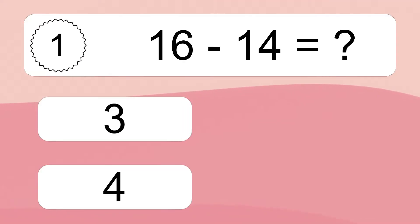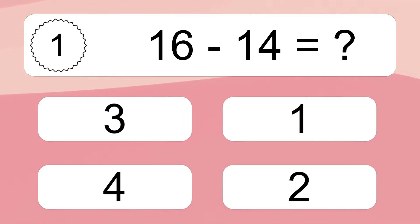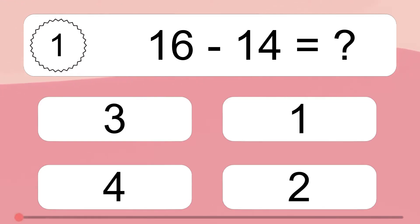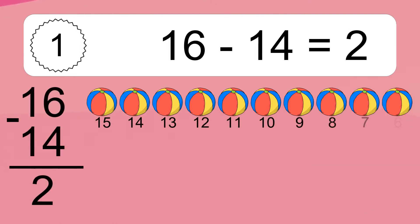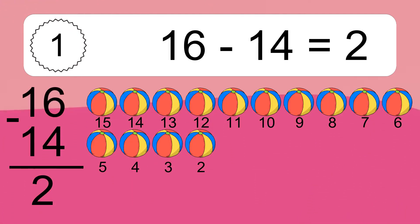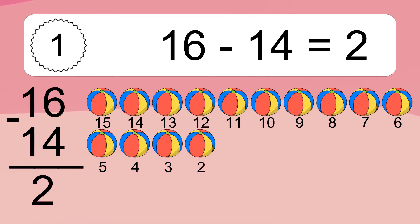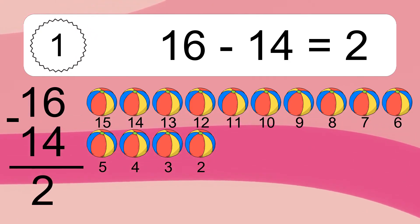16 minus 14 equals what? 16 minus 14 equals 2. Let's count it: 15, 14, 13, 12, 11, 10, 9, 8, 7, 6, 5, 4, 3, 2.